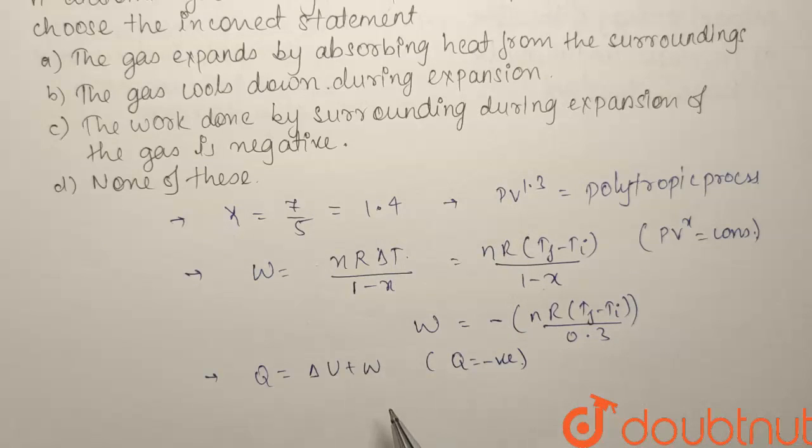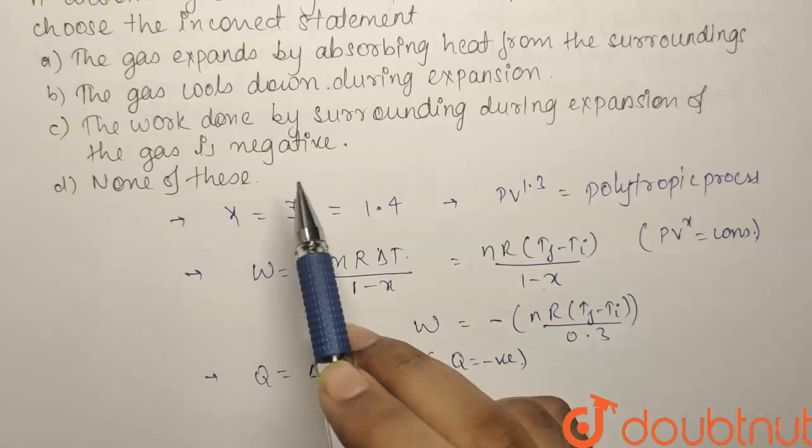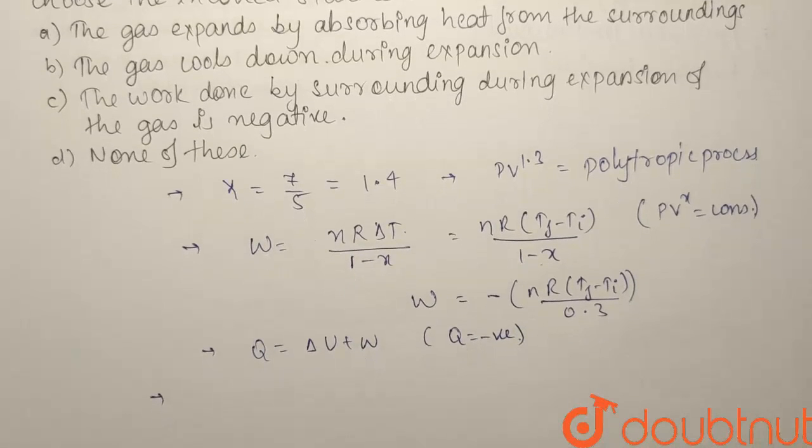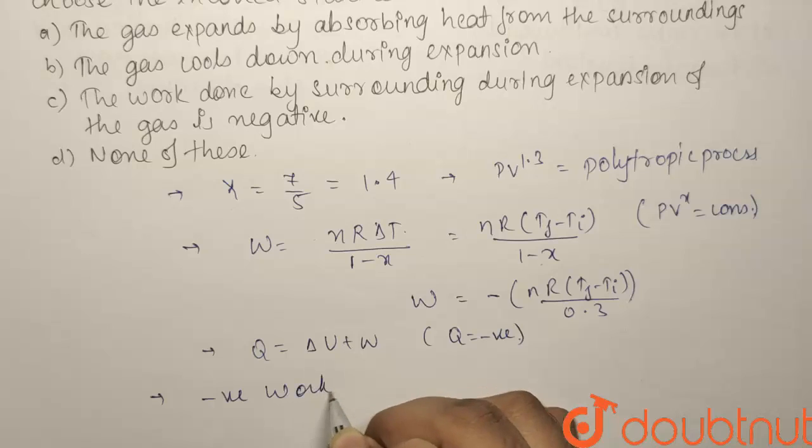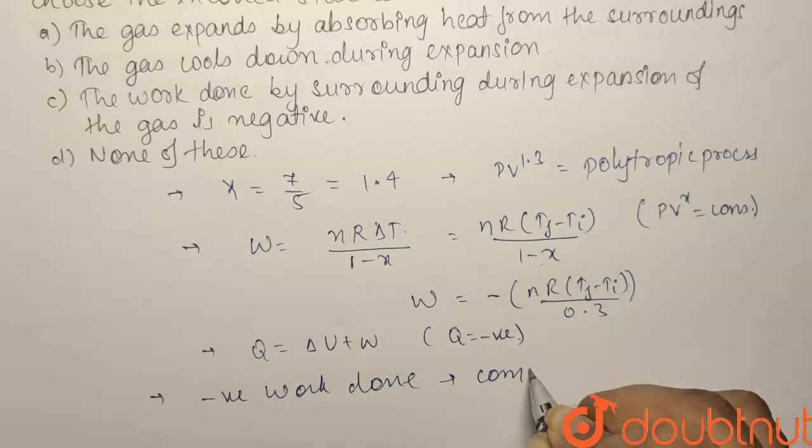Now, if you have a look at the last option, that is the work done by surrounding during expansion of a gas is negative. Now, if you have a look, what is negative work done? How do we define negative work done? For negative work done, there has to be a compression.